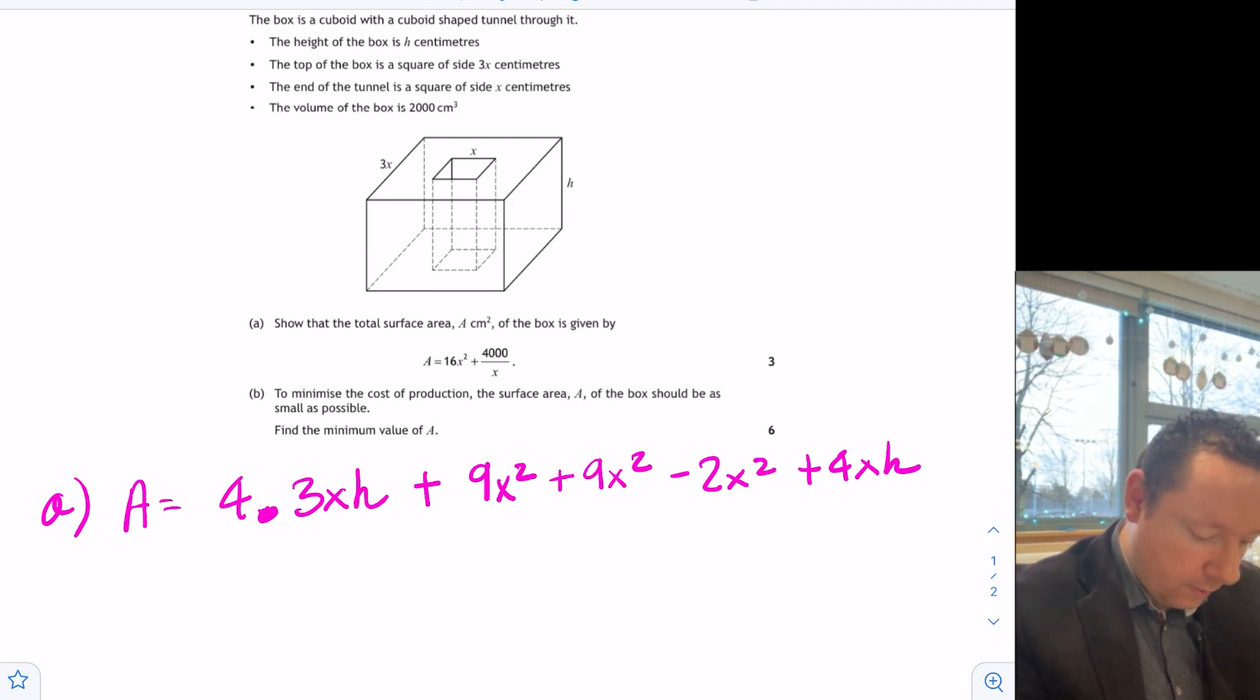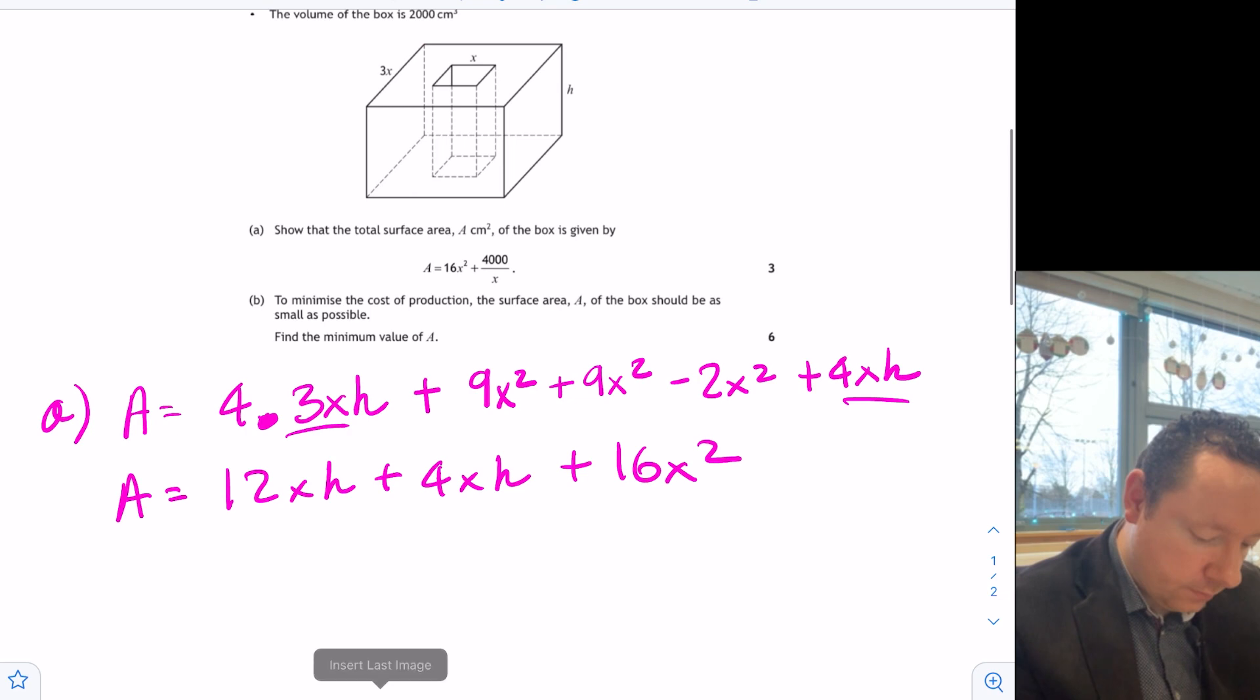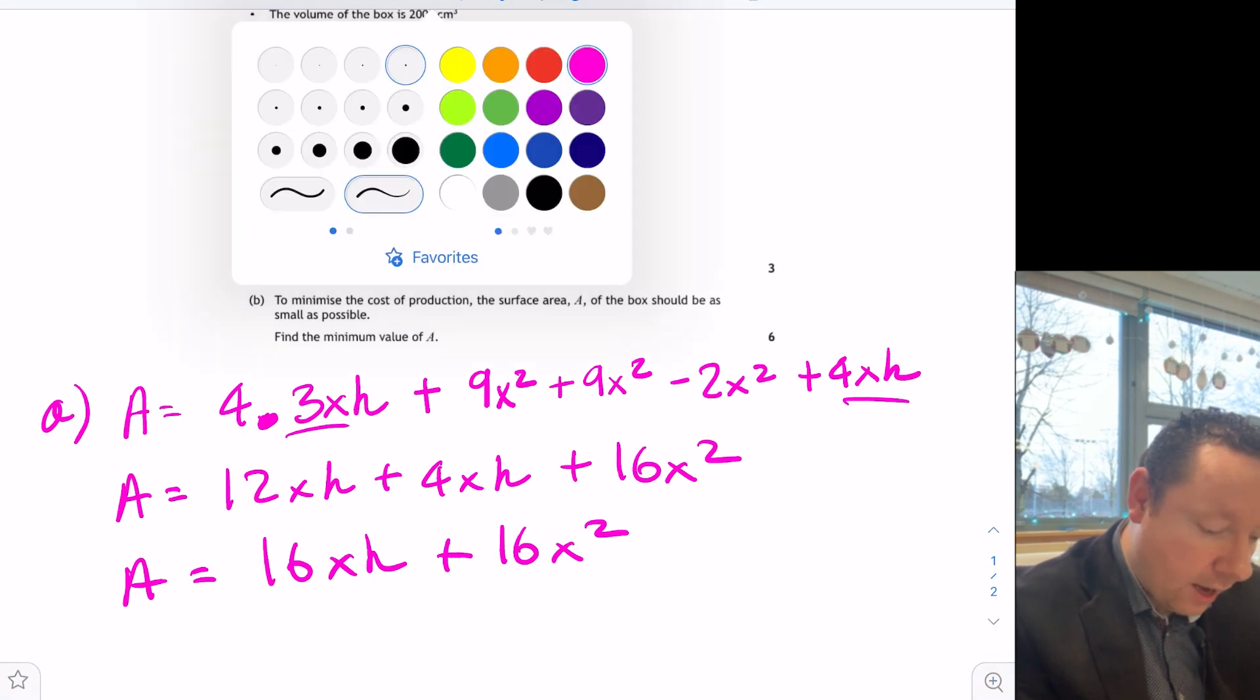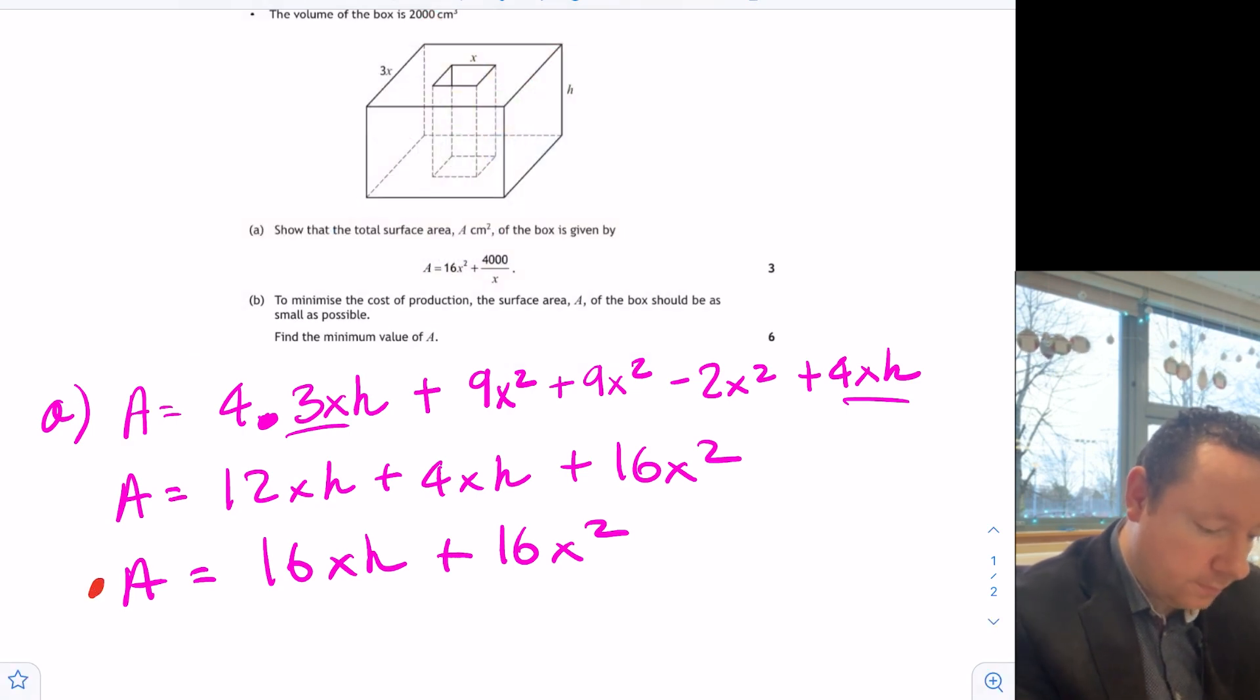Tidying all that up a little bit. My area is 12xh plus 4xh. That's just my first and my last one. And then my x squared is 18 minus 2 is 16x squared. Or my area is 16xh plus 16x squared. If you can get that far, you're getting a mark. But we're not finished there. Because our area in the question has not got any h in it. So we need to work out if we can eliminate that h somehow. And let's look at the information.